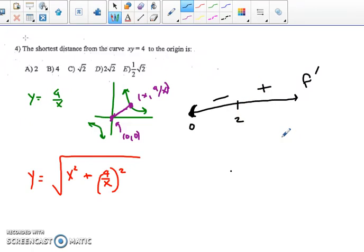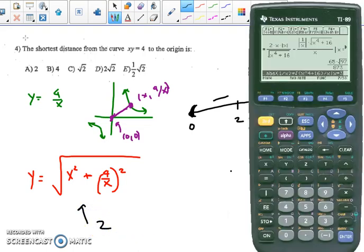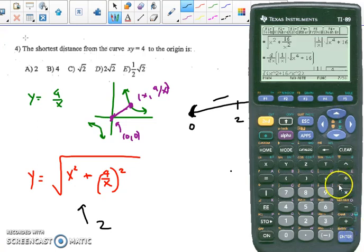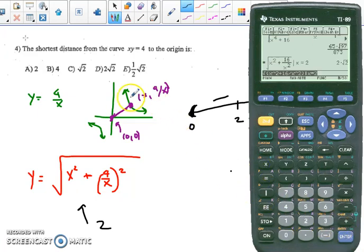So that means I have a local minimum. So that means where x equals 2, I actually have my minimum distance. So what is that distance? Well, I can plug 2 into this equation. But since I have my calculator, I'm going to do it on my calculator. So I scroll all the way back up, scroll up to where I had initially put in my function, which was here, and evaluate it such that x equals 2, enter. And I get out 2 rad 2, so my answer is D.